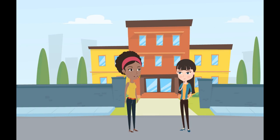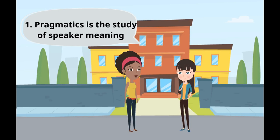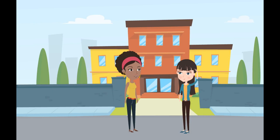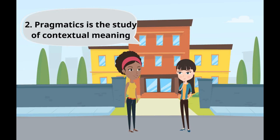If you're interested in more, I can recommend the book Pragmatics by George Yule — that's the book we use in our course. He explains pragmatics along four different dimensions. First, pragmatics is the study of speaker meaning — it is concerned with the interpretation of the speaker's meaning by the listener. For example, if someone asks 'May I have a glass of water?' the listener interprets that the speaker is thirsty.